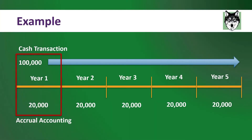Let's go back to the example. In year one you spent a hundred thousand dollars — this is when the cash actually exchanges hands — but the accountants only recorded twenty thousand dollars worth of depreciation expense. In year two, no money exchanges hands, but you record another twenty thousand dollars worth of depreciation expense. So there's a significant difference between what is happening with the cash and what is being recorded as an expense.